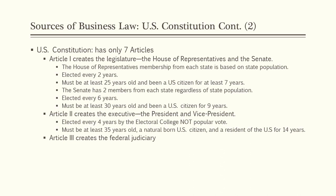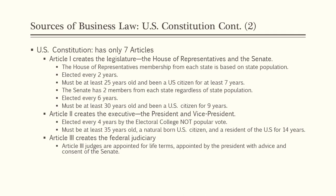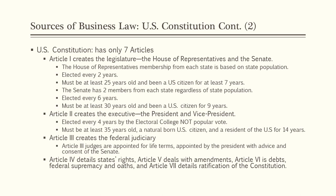Article III creates the federal judiciary. Article III judges are appointed for life terms by the president with advice and consent of the Senate. Article IV details states' rights. Article V deals with how to amend the Constitution, requiring two-thirds of the states to ratify any amendment. Article VI covers federal supremacy and oaths of office. Article VII details ratification of the Constitution, which also required two-thirds of the states. That's it — just seven articles and it's not very long.